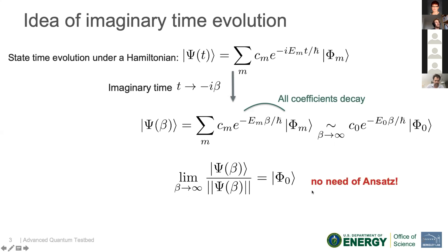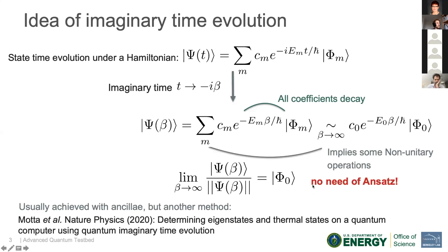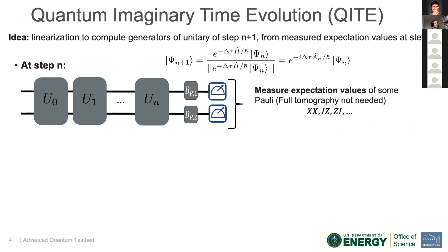And the good point with this is that there is no need of an ansatz, so that's a very interesting part. But the complication here comes from the fact that some non-unitary evolution is needed. In this paper, in Caltech, they found the way to do this without using ancillae, which is usually how these types of non-unitary evolutions are done.